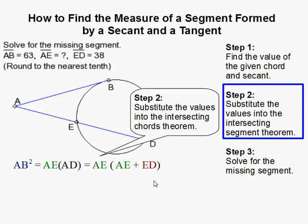I expanded this because AD is also equal to AE plus ED. Next we substitute the values: 63 for AB, 38 for ED, and we leave AE as the variable we're solving for.